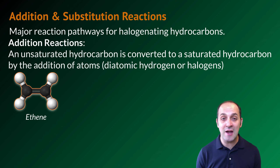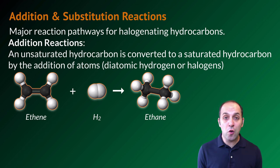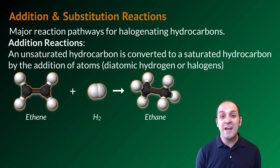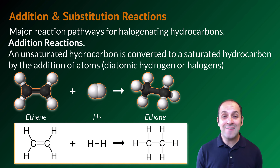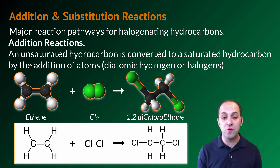Here's one example of an addition reaction. We start with ethene, an unsaturated hydrocarbon, and we're going to add diatomic hydrogen to it. What's going to happen is that we're going to break that double bond and each of those lone electrons are then going to bond with each of the hydrogen atoms, making a saturated ethane molecule. We can do the exact same thing with halogen molecules — here you see ethene and we're adding a chlorine molecule to it to produce 1,2-dichloroethane.